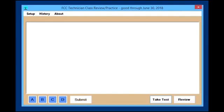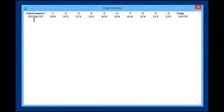Let's talk a minute about the history. We took that practice test so I can view history now that it says that on this date, on sub-element 1, I got 5 out of 6 correct. My composite score was 29 out of 35. It just kind of keeps you an ongoing running record of how you're doing each one of the sub-elements on tests that you have taken.